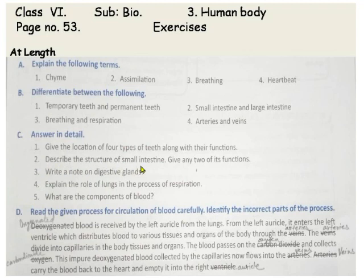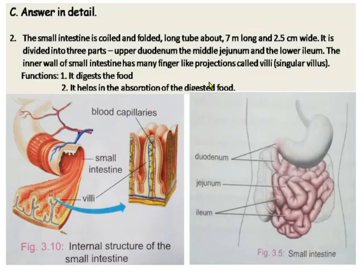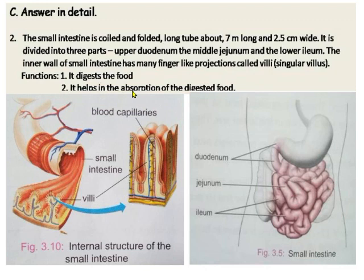Question number 2: describe the structure of the small intestine and give any two of its functions. The small intestine is a coiled and folded long tube, about 7 meters long and 2.5 centimeters wide. It is divided into three parts: upper duodenum, middle jejunum, and lower ileum. The inner wall of the small intestine has many finger-like projections called villi (singular: villus). Its functions: it digests food and helps in the absorption of digested food. You will draw two diagrams — the internal structure of the small intestine and the different parts of the small intestine.